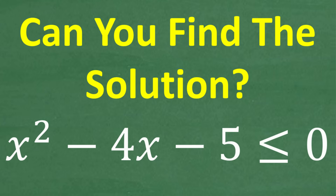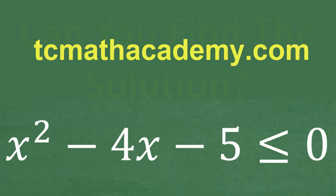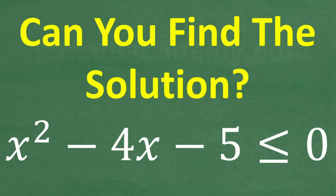Here is the problem: x squared minus 4x minus 5 is less than or equal to 0. If you think you know the answer, go ahead and put that in the comment section. I'm going to walk through all the steps on how to think about this problem and how to solve it. My name is John, I've been teaching math for decades, and if you need math assistance, check out my program at tcmathacademy.com. If this video helps you, make sure to like and subscribe.